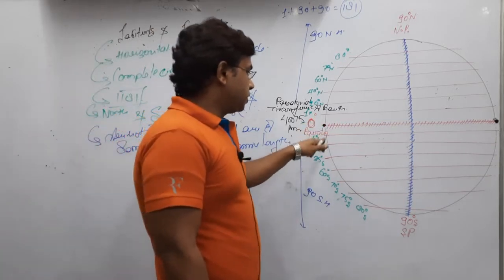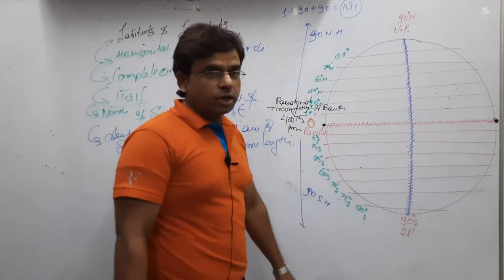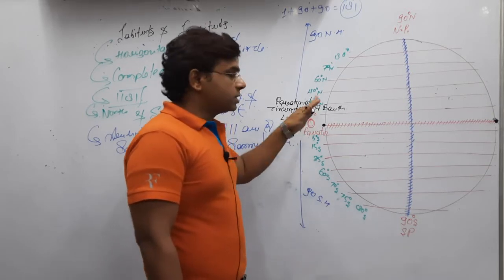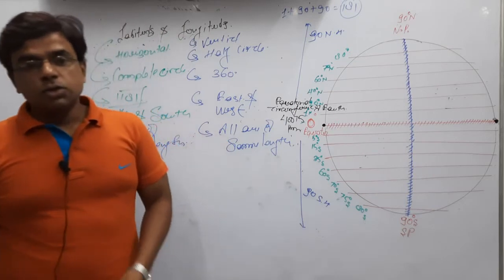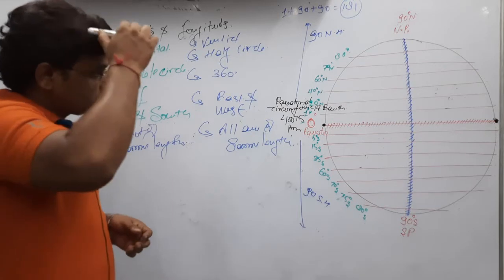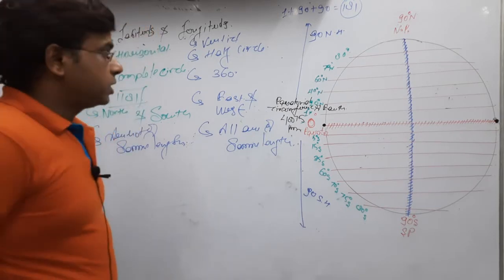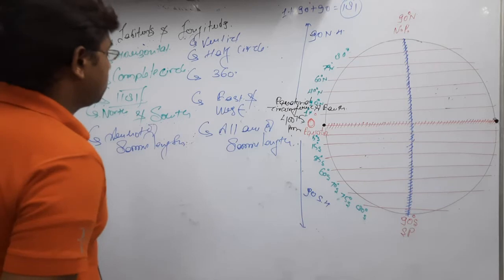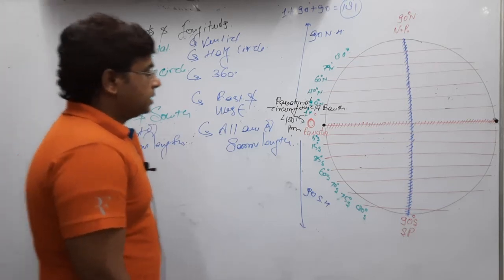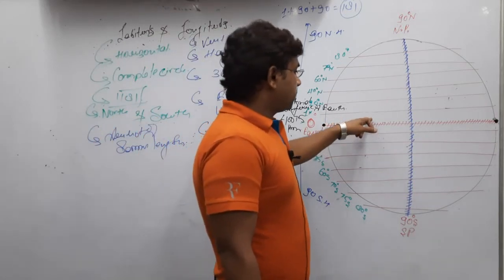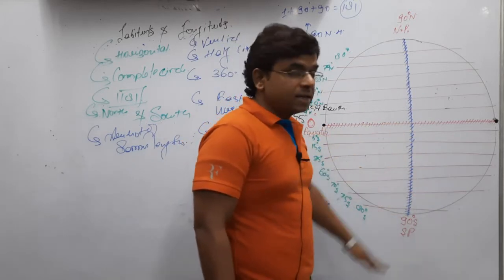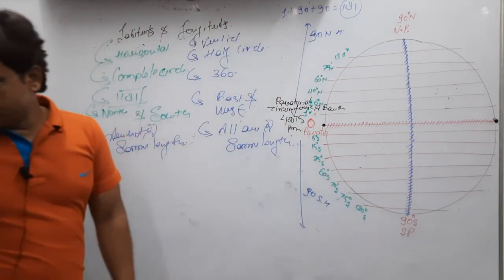The equator is a latitude with a value of 0 degrees and a length of 40,075 km, which is also known as the equatorial circumference of the earth. Starting from the equator at 1-degree intervals, we have 90 latitudes in the northern hemisphere and 90 latitudes in the southern hemisphere.